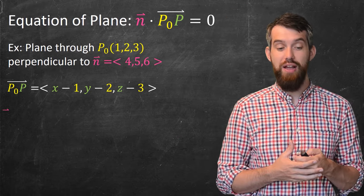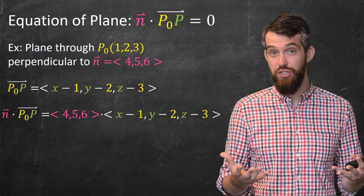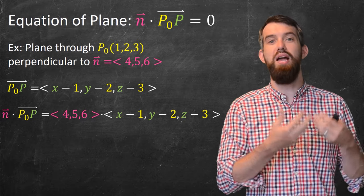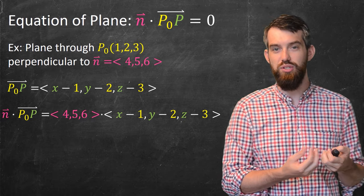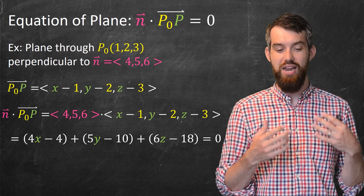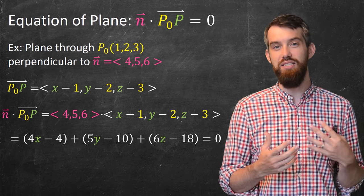Okay, now that I know the P₀ to P vector, I can take their dot product of these two things. The dot product is the sum of the first two components multiplied, then the second two components, then the third two components. So if I expand all of this out, I'm going to get this 4x minus 4 plus 5y minus 10 plus 6z minus 18 is equal to zero.